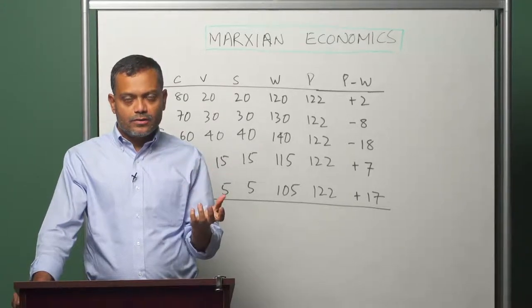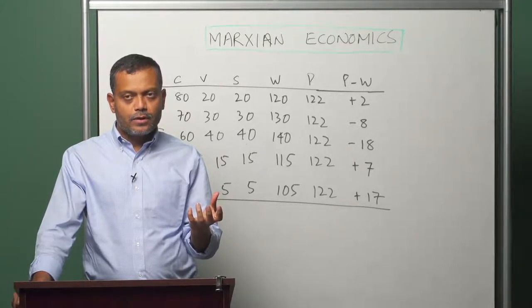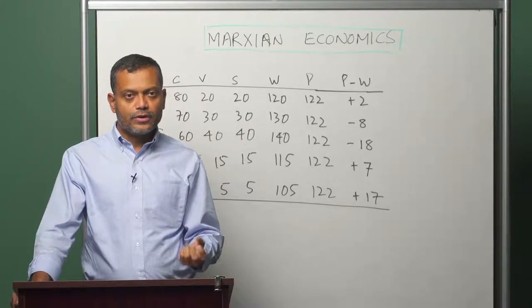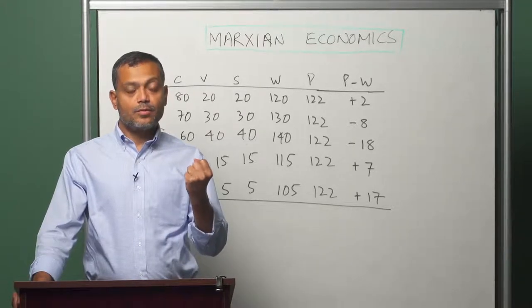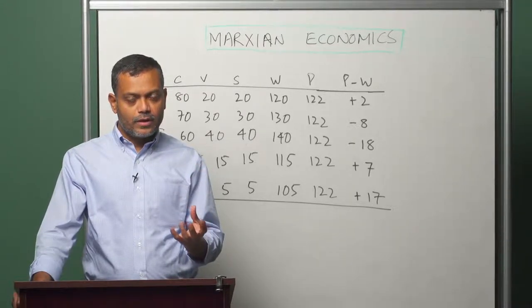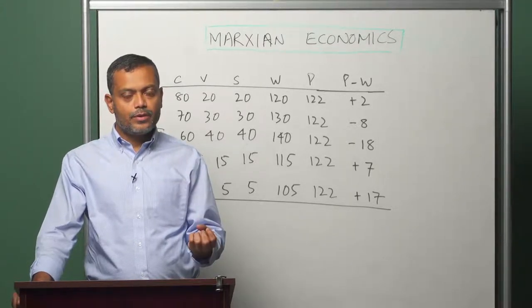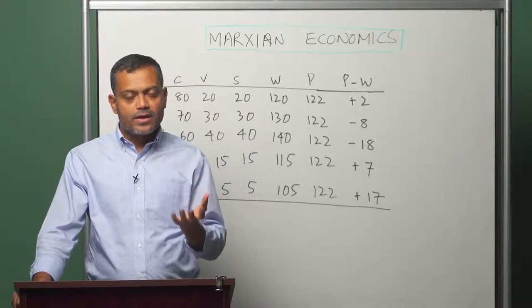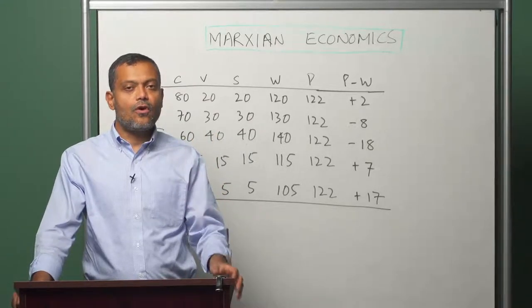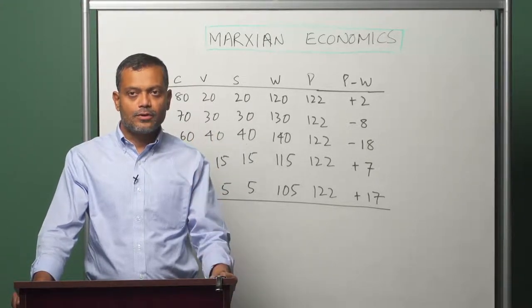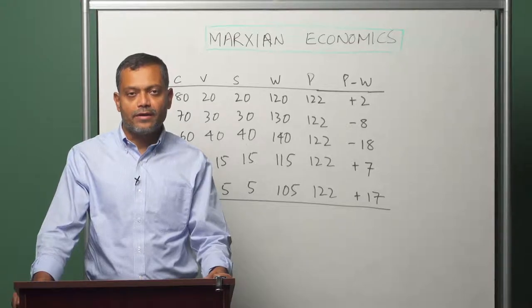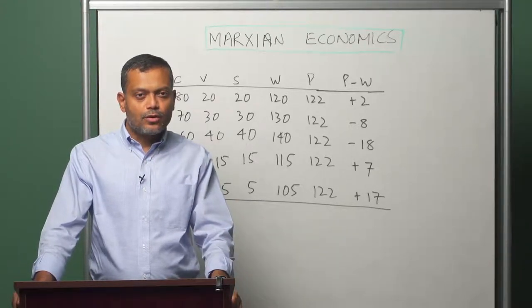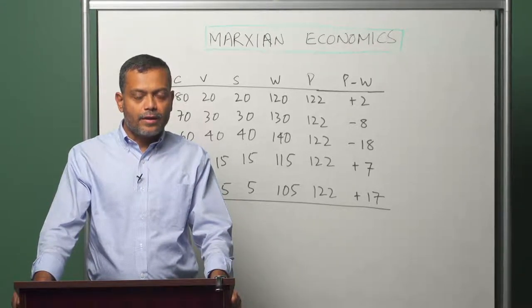Surplus value: industrial capital gets industrial profit, commercial capital gets commercial profit, money capitalists get interest, and now the final and fourth form or fragment of surplus value is rent. We will now try to understand the origin of rent.